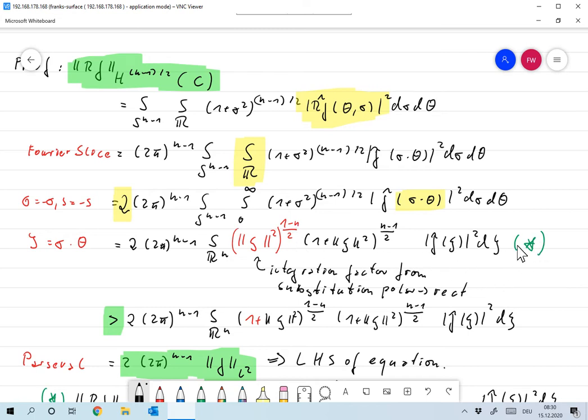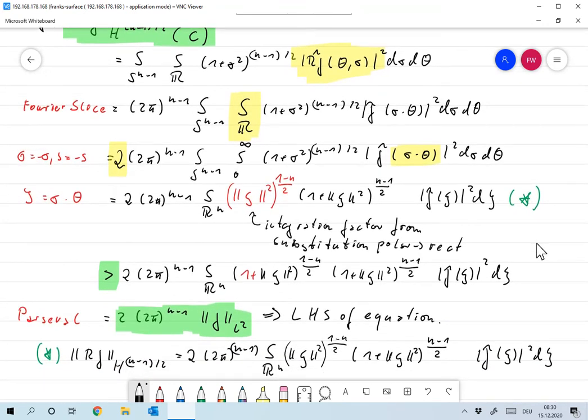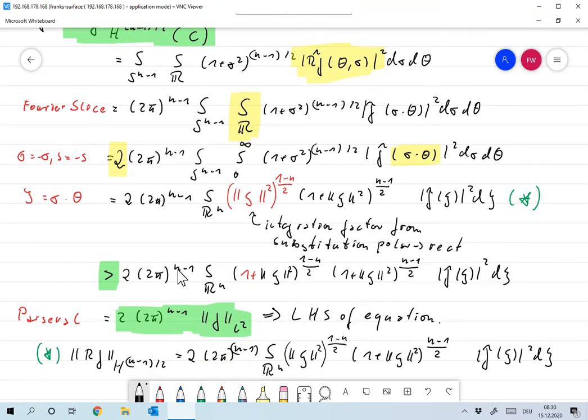Sigma is the norm of psi, so I plug this in over here, and I get an integration factor from the substitution as norm psi to the (1-n), which I write as (||psi||^2)^((1-n)/2). And this is equation star. This is the same as the norm of Rf, and I will refer to this a little bit later.